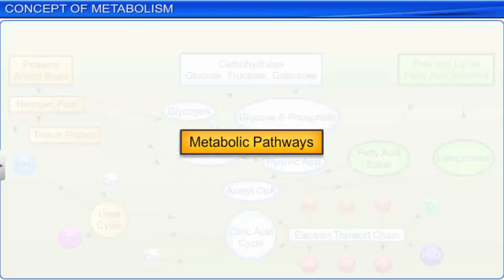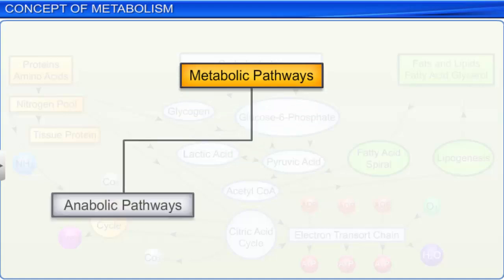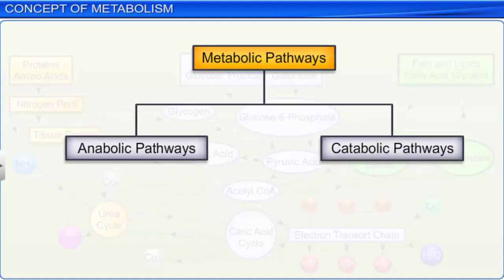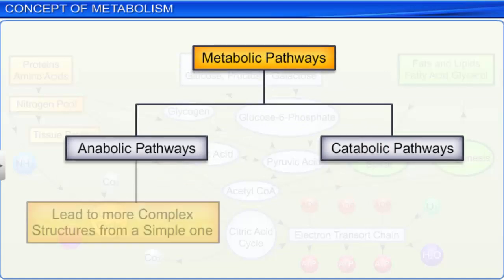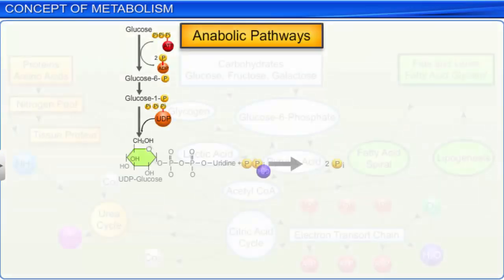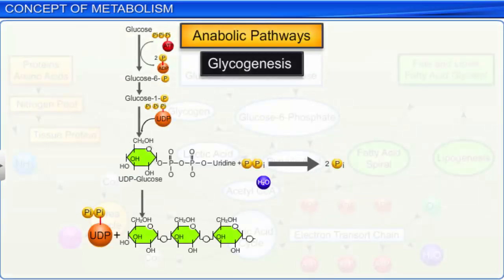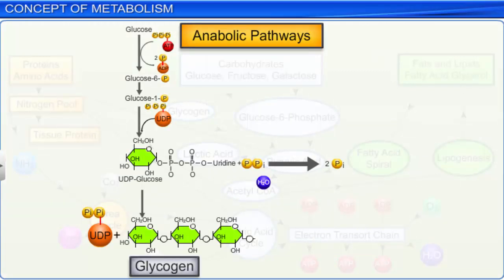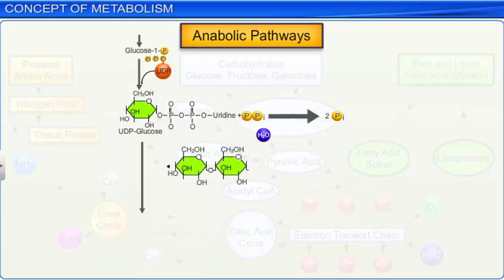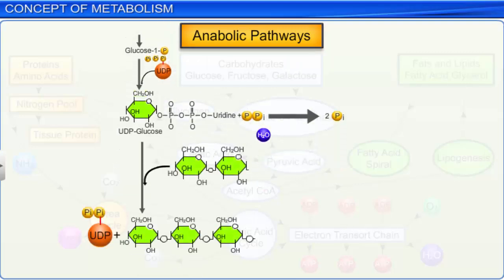Metabolic pathways can be divided into two categories: anabolic pathways and catabolic pathways. Anabolic or biosynthetic pathways lead to more complex structures from a simple one. For example, the process of glycogenesis, which involves the biosynthesis of glycogen from glucose — in other words, glucose molecules are added to chains of glycogen for storage.